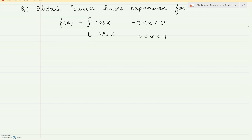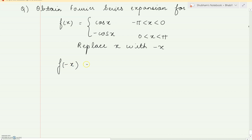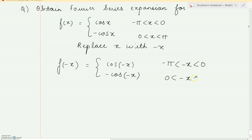We need to check by replacing x with minus x. So first let us replace x with minus x — wherever I get x, there I have replaced minus x, simply without using my brains. Now let me simplify this expression. Cos of minus x — I know that is cos x, and this will be again minus of cos x.